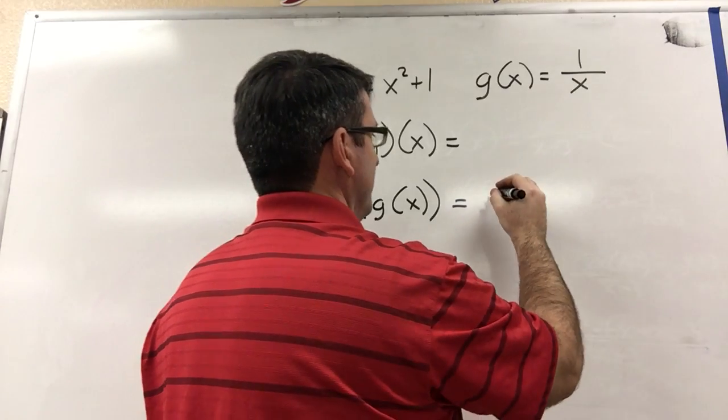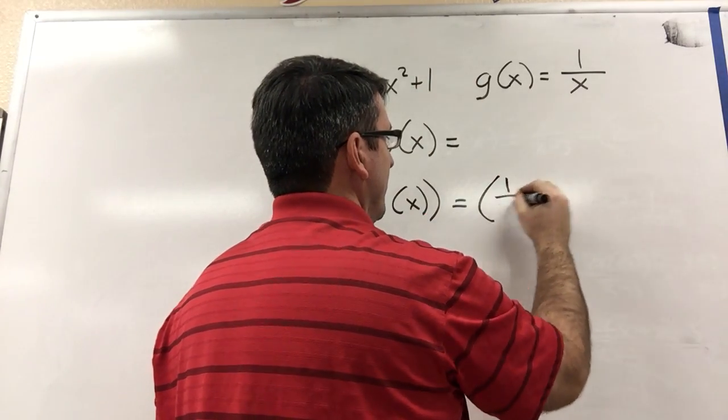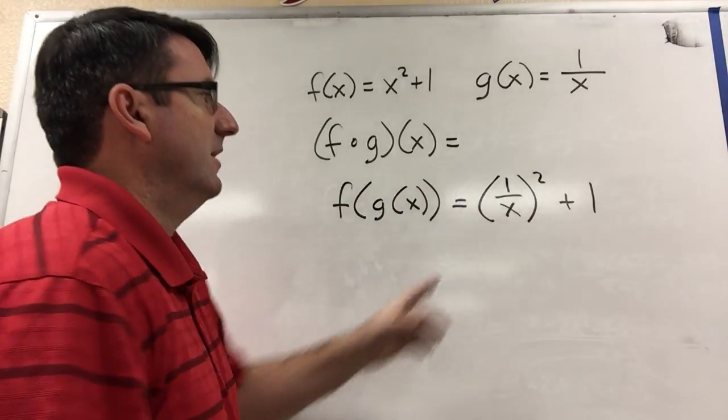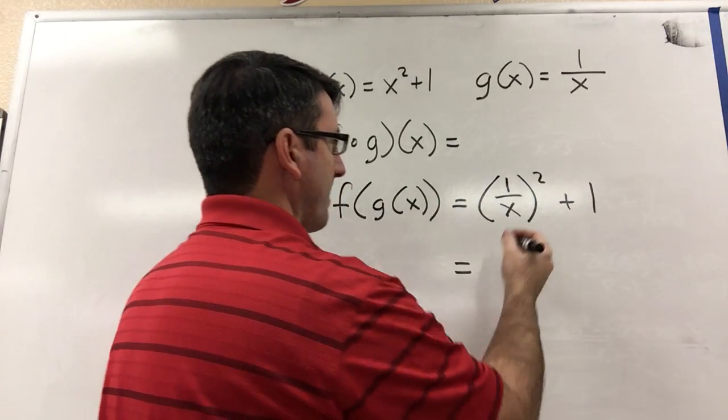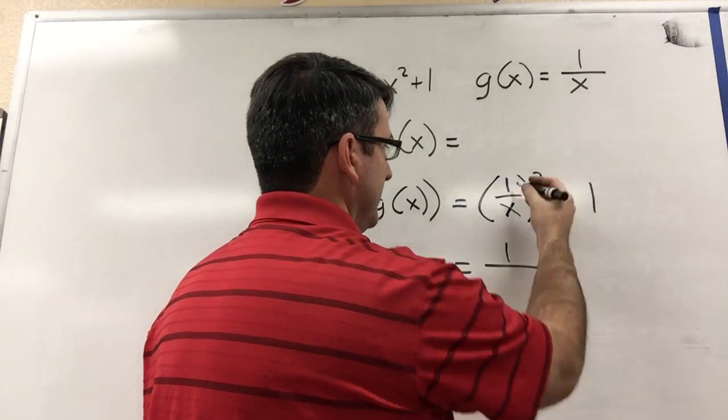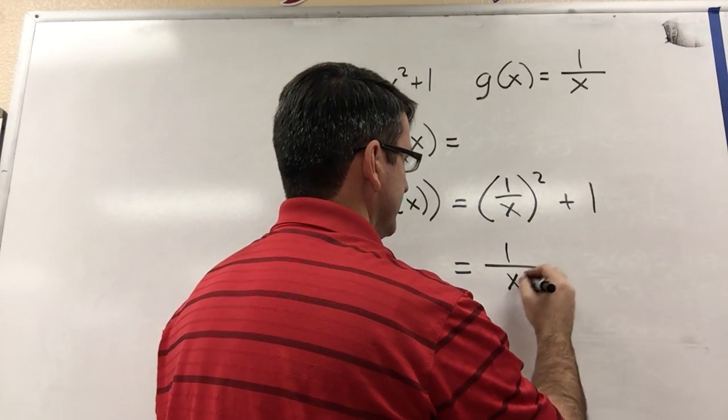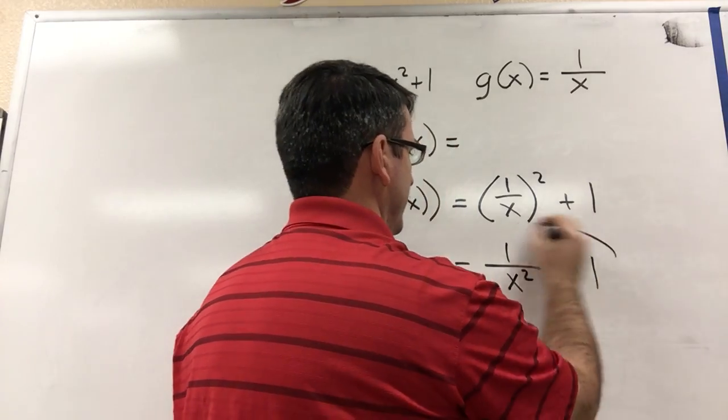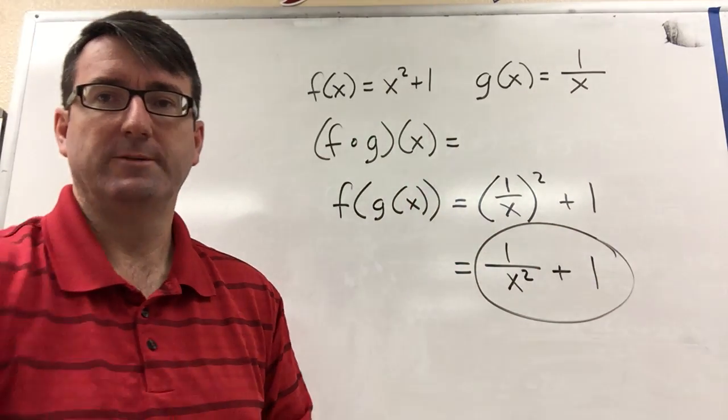So this is going to be, instead of x squared plus 1, it's 1 over x squared plus 1. And 1 over x squared, 1 squared is 1 divided by x squared, and then plus 1. That's our answer, 1 over x squared plus 1.